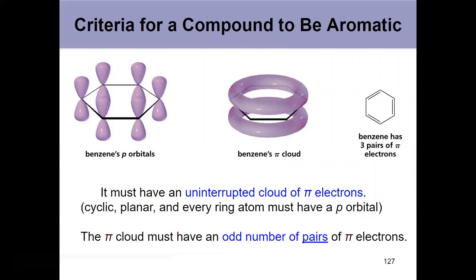Well, benzene is the first compound we're going to see that is aromatic. And there's some criteria for a compound to be aromatic. It has to be cyclic. I'd write these down, too. It has to be cyclic.